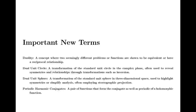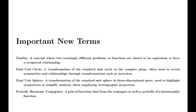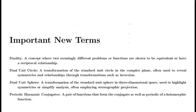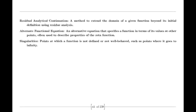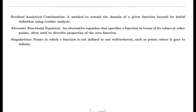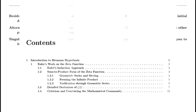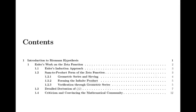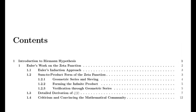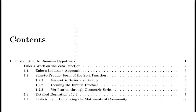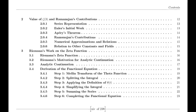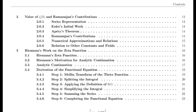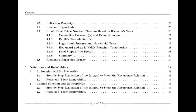Moving to the 19th century, we encounter Bernhard Riemann, who expanded our understanding of complex functions. Riemann introduced the concept of analytic continuation, which allowed for the extension of functions beyond their initial domains. He extended the Riemann zeta function — initially defined only for complex numbers with real parts greater than 1 — to the entire complex plane except for s equals 1, where it has a simple pole.